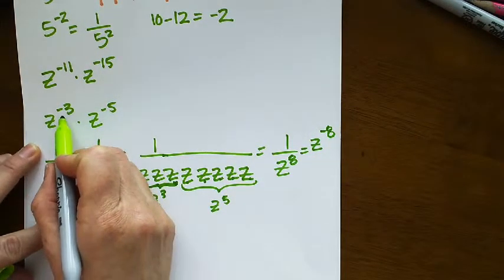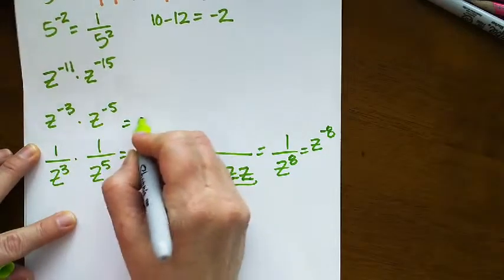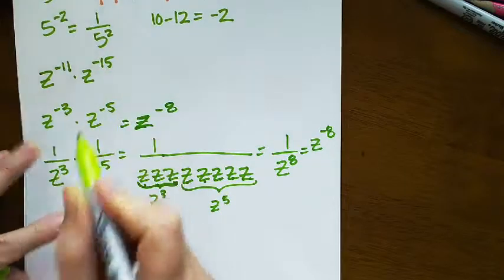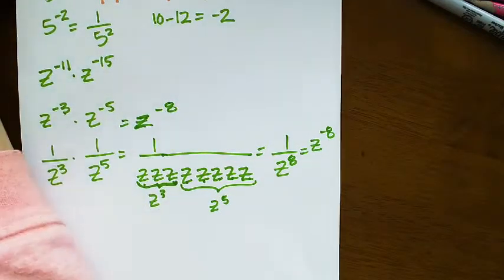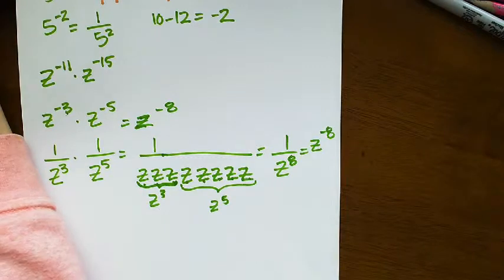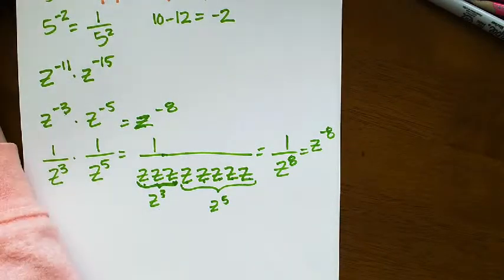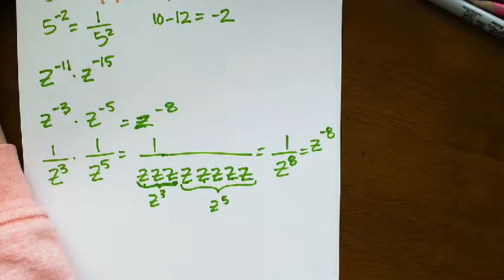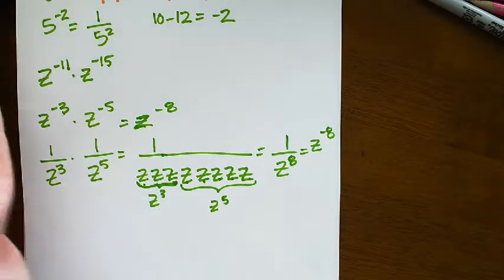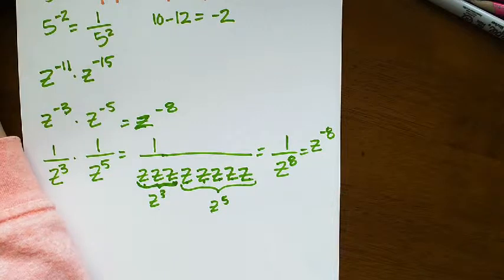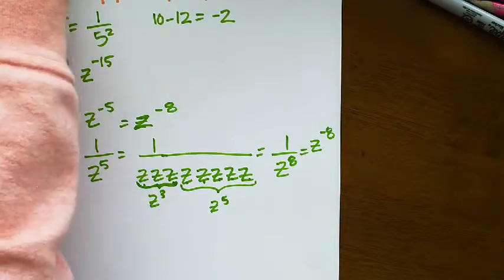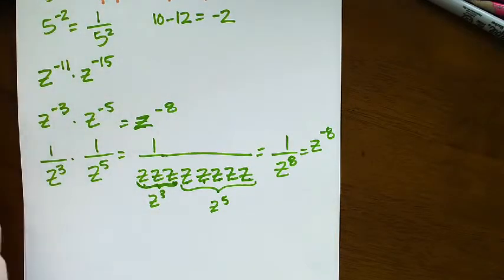So the shortcut is you just add the exponents. That would be z to the negative 8 if I added negative 3 and negative 5. I'm going to type that in. Oh, whoops, I typed in the one that I did not the one they gave me.